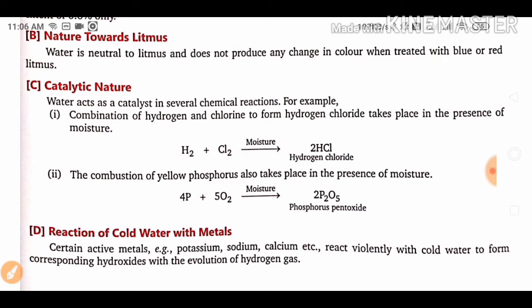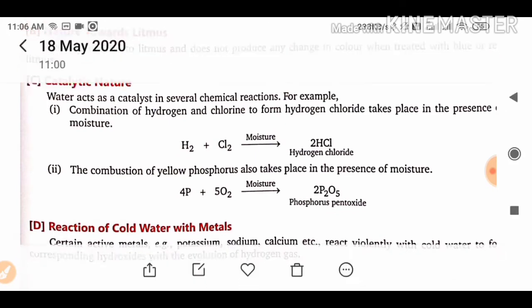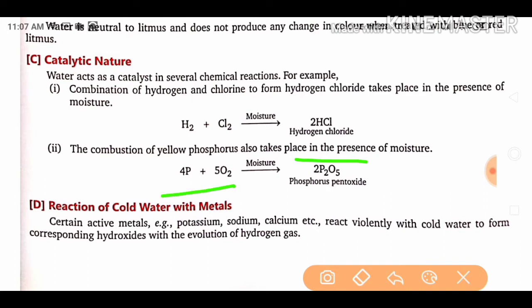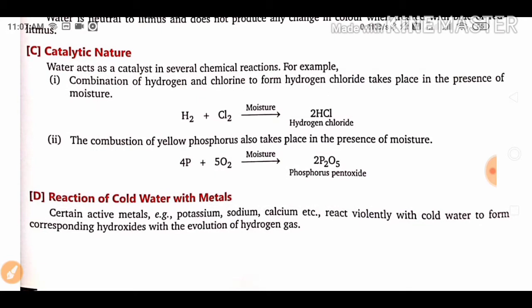The combustion of yellow phosphorus also takes place in the presence of moisture. The reaction is: 4P + 5O₂ in the presence of moisture forms two molecules of phosphorus pentoxide (P₂O₅).